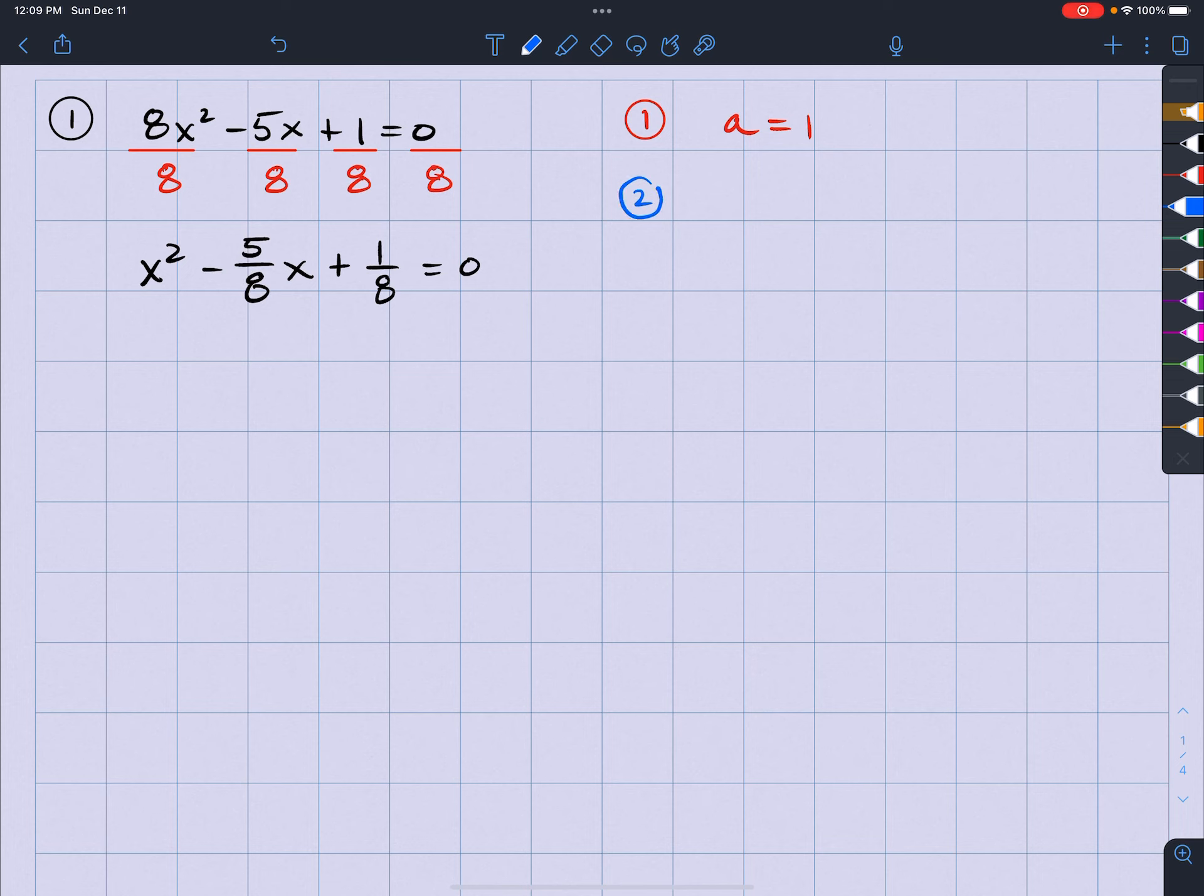Second step is that we have to move the so-called old C to the other side. So here's our C term, and we have to move that over to the right side. Since it's plus 1 eighth, we're going to subtract the 1 eighth. So my left side is going to stay exactly the same. But my right side, because I'm subtracting that 1 eighth, I'm going to have negative 1 eighth on the right side.